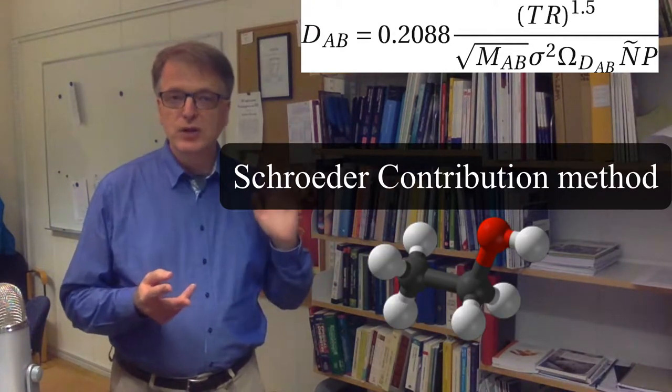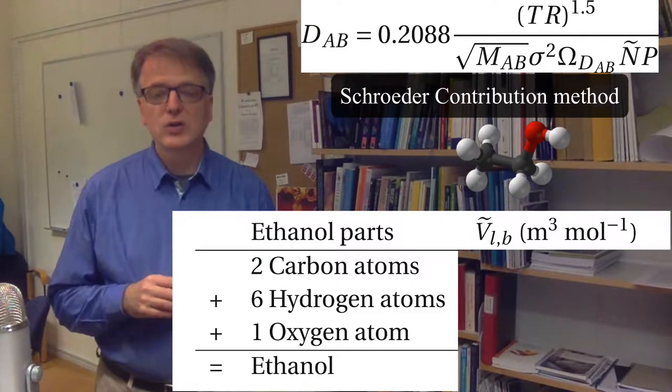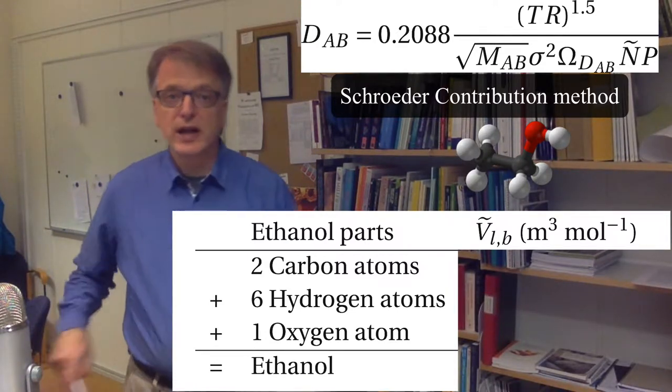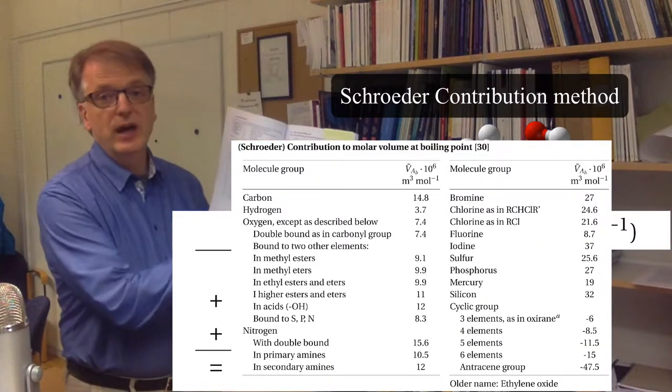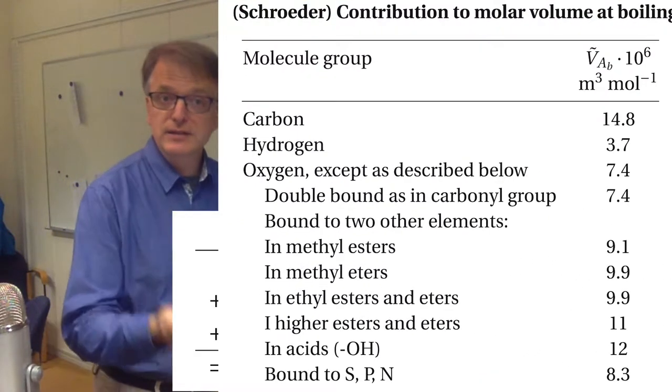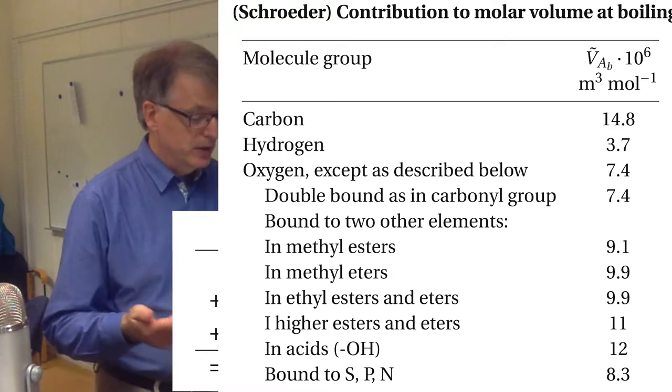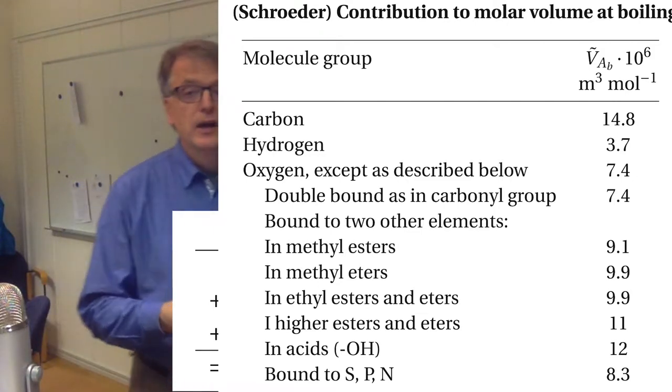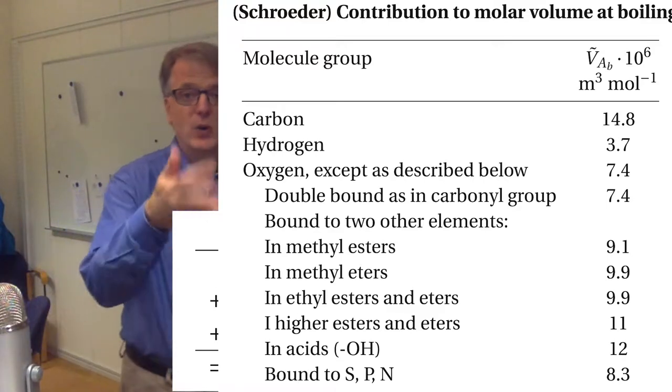It consists of two carbon atoms, six hydrogen atoms and one oxygen atom. And these atoms all take up space. So then you take your handbook and you look up a table. And there you have different atoms. And in the case of oxygen, you have different cases, for example, double bound as in a carbonyl group, bound to two other elements in methyl esters and so on. And then oxygen takes up a different amount of space depending on how it's bound to other.